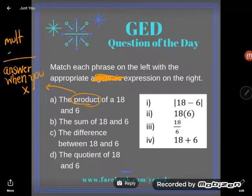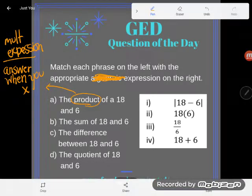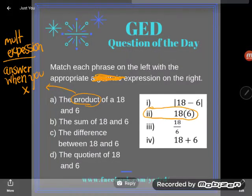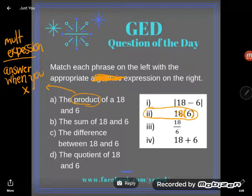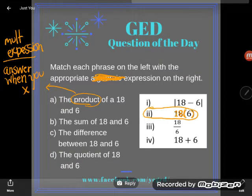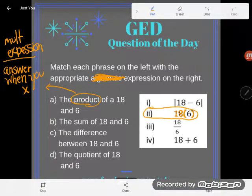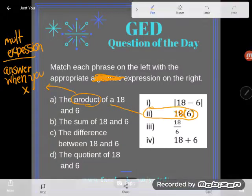I'm looking here for a direct translation of make 18 and 6 multiply. I look here and in number 2 I see the numbers 18 and 6 just shoved up against each other, and the only thing between them is parentheses. Parentheses with proximity mean multiplication. This is an example of the product of 18 and 6. A is 2.